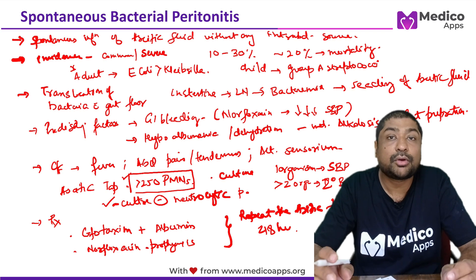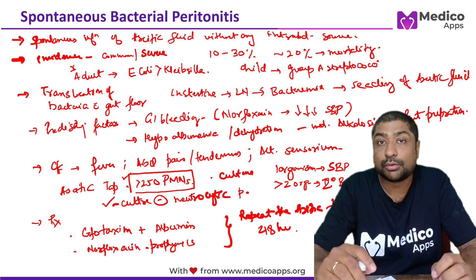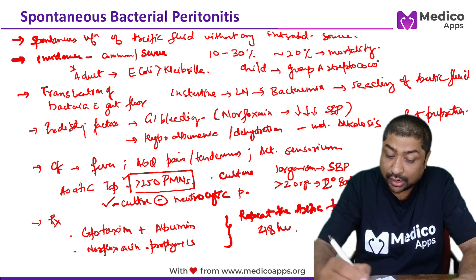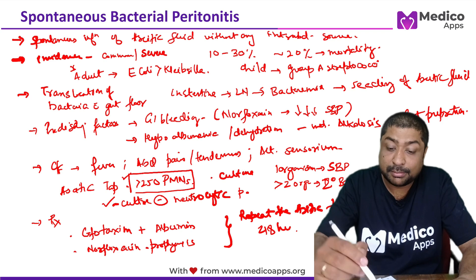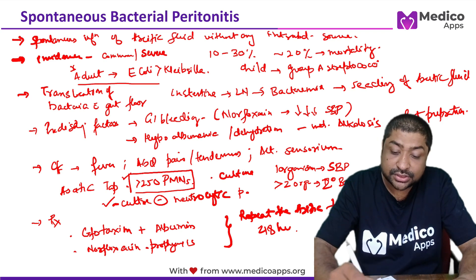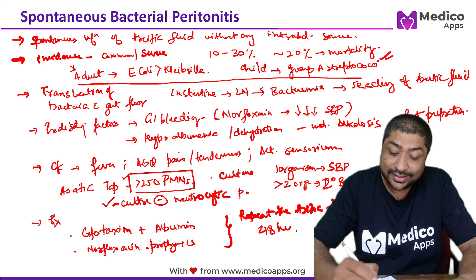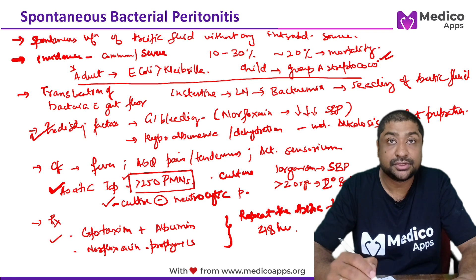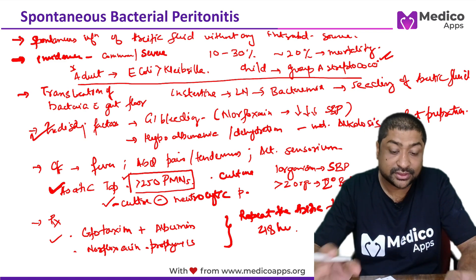SBP is a very important topic with multiple questions asked in almost every examination. Key points to remember: the causative organism, management, findings on ascitic tap (PMNs >250), and predisposing factors — examination questions are framed around these points.